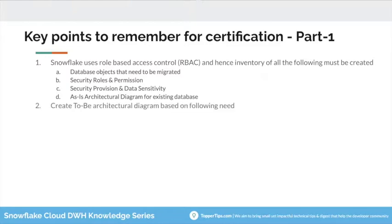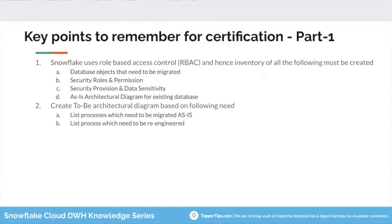Then you create a to-be architecture diagram, and in that you list processes which need to be migrated as-is — objects and components you want to migrate that are also supported in Snowflake. You also list processes which need to be re-engineered, because not every concept works equivalently in Snowflake. You may need to re-engineer, or you may want to get benefit out of Snowflake's new features.